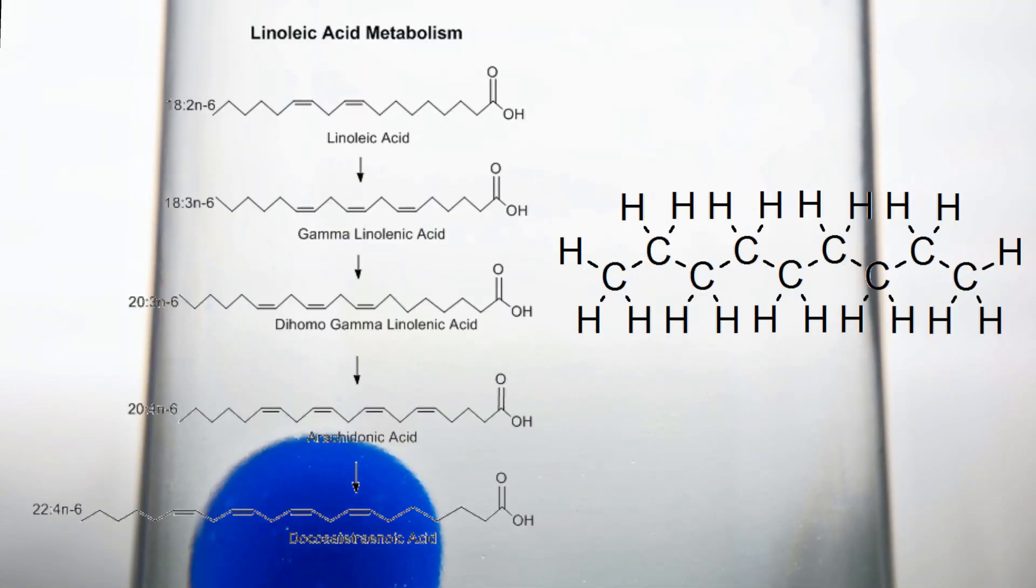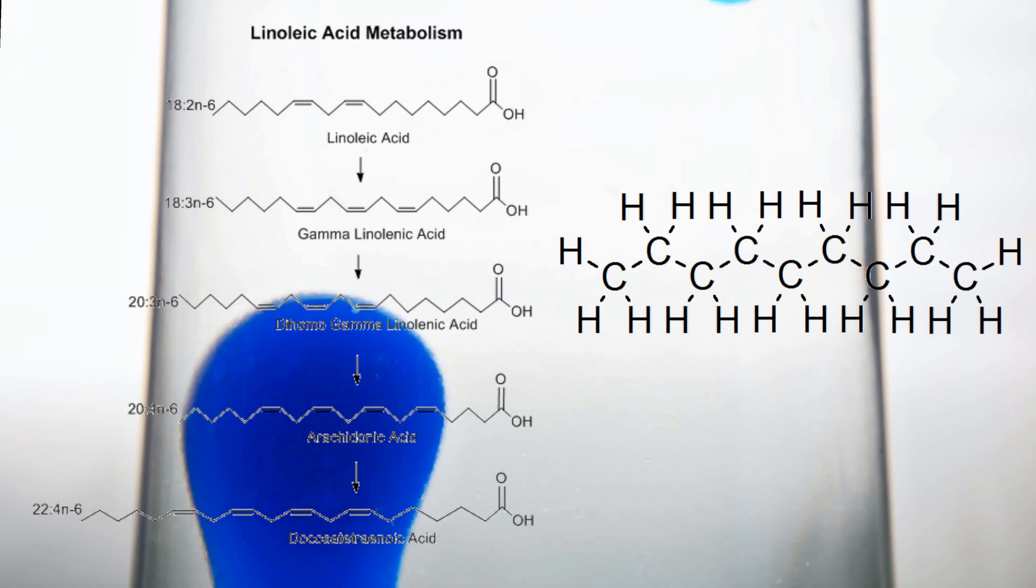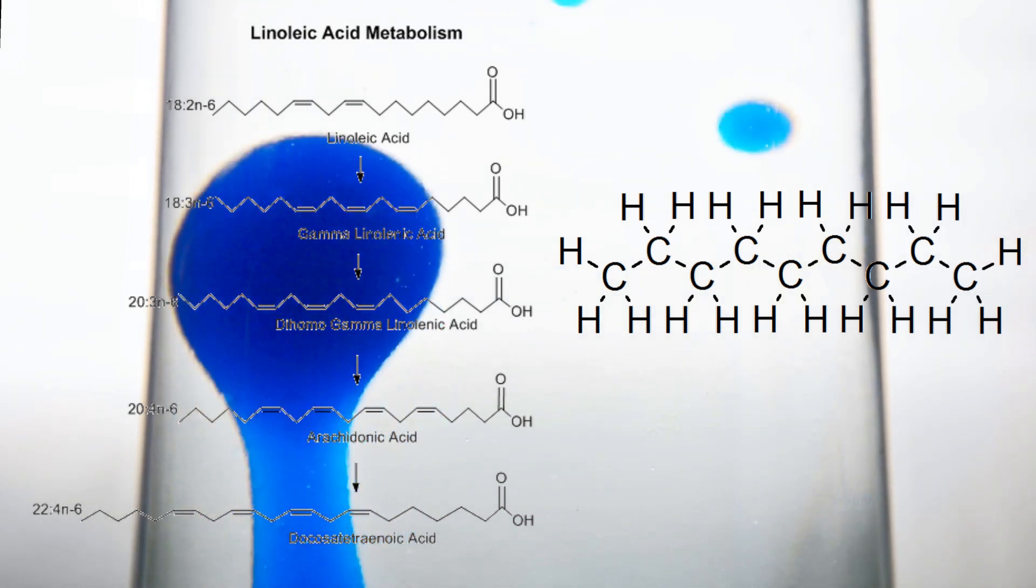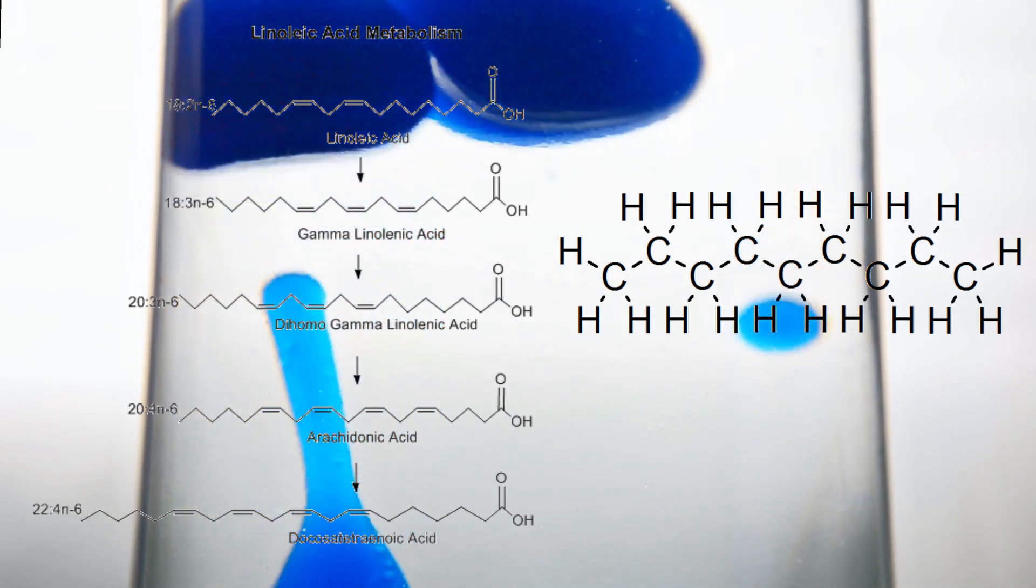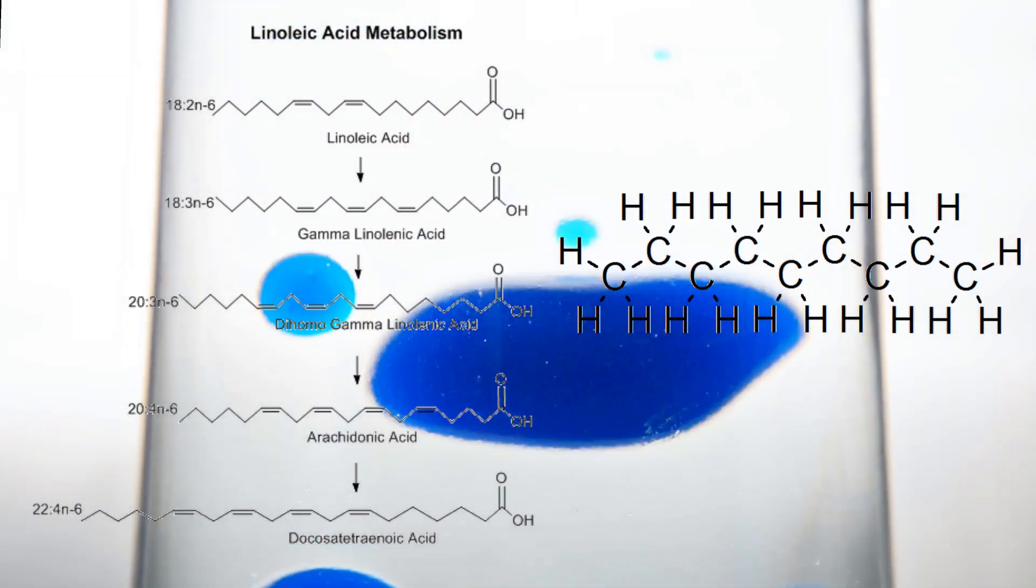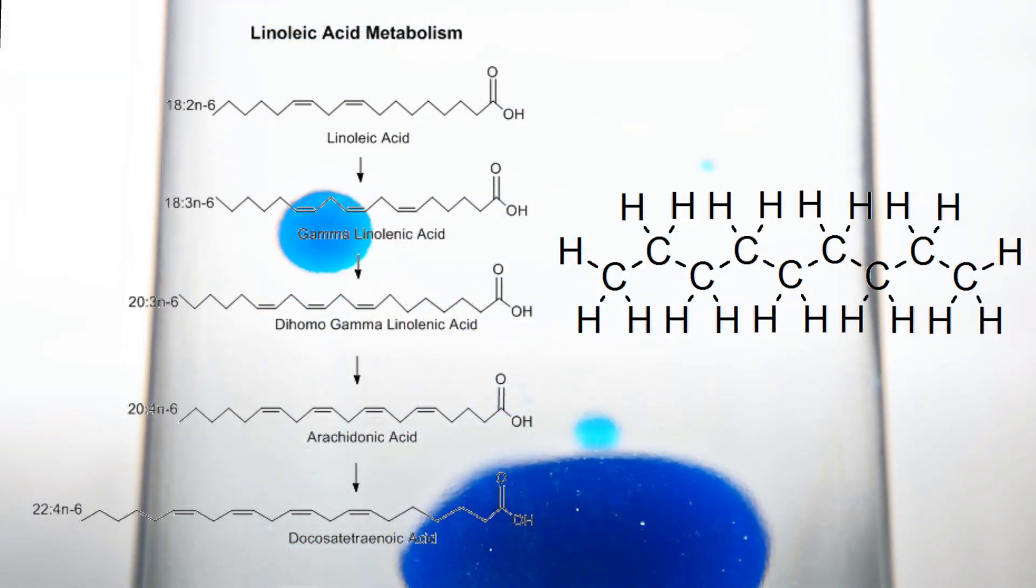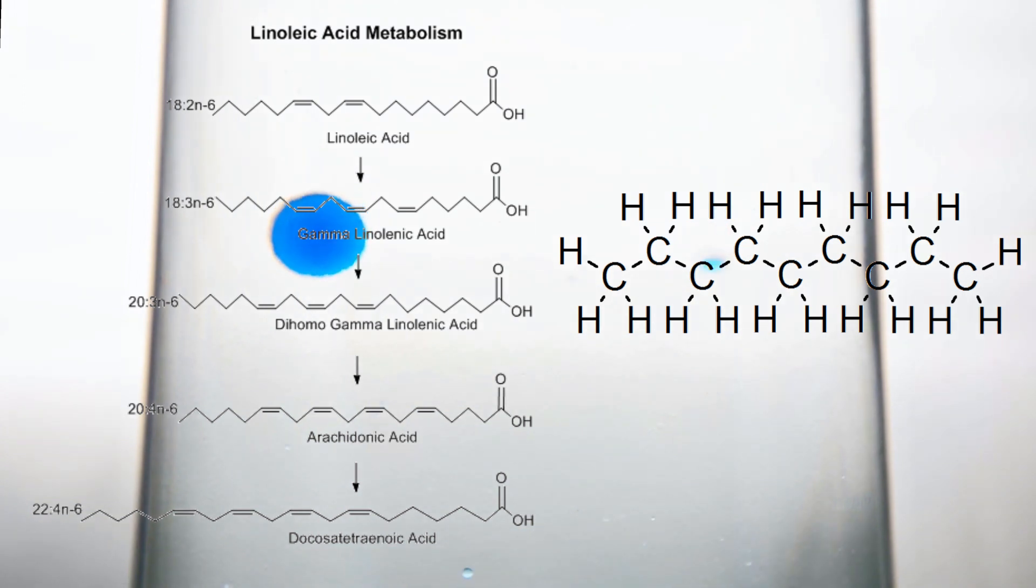The difference between the two should be apparent from the images of the two different types of oil as we've shown them so far. One is saturated, but its shell is not full, while the other is. Carbon needs four connections to be complete. This makes the molecule far more stable than without a full shell.